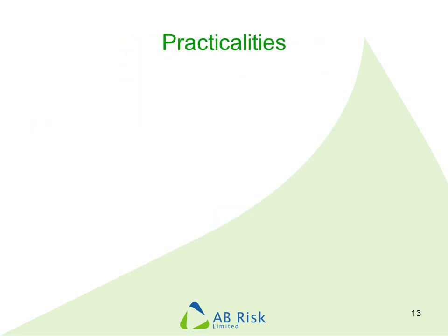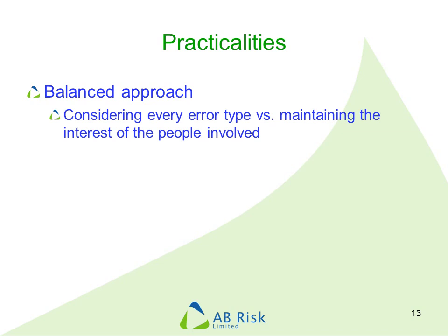Finishing now with just a few words about practicalities. The best way of doing an HEA is to have a group of people together who know the task and get them all involved. What you really need is a balanced approach. There are a lot of different types of error that may occur, and it is quite easy to get bogged down going through every error type and spending a lot of time on each. The reality is, we're looking for the most significant errors and focusing our efforts there — otherwise there's a real danger you turn people off and they stop participating.